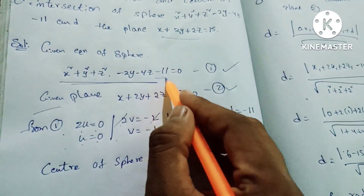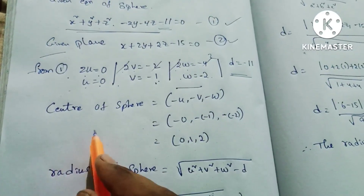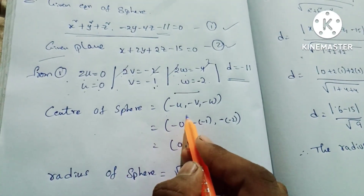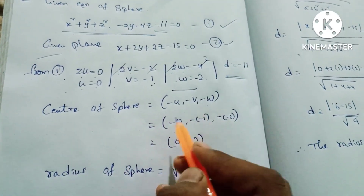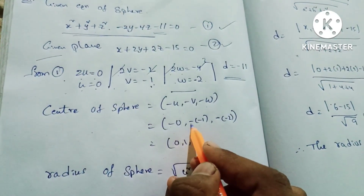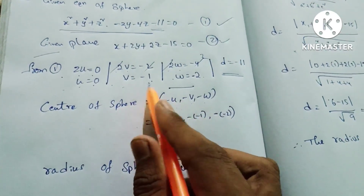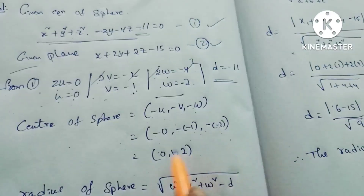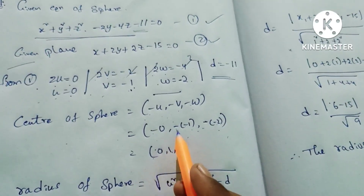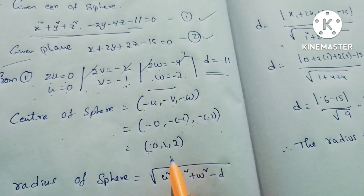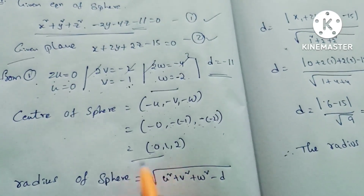The constant d = -11. The center of the sphere is given by the formula (-u, -v, -w). So the center is (-0, -(-1), -(-2)) = (0, 1, 2). We have found the sphere center.